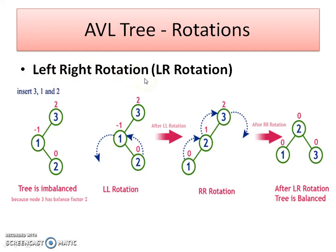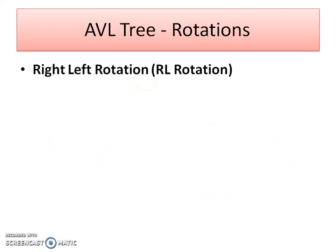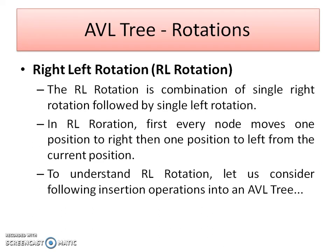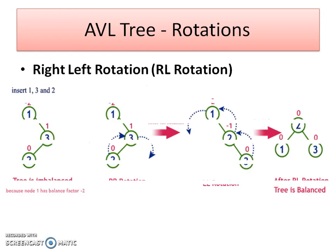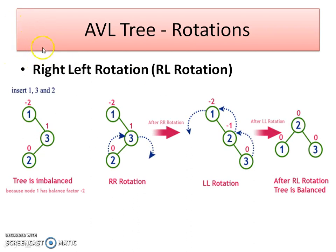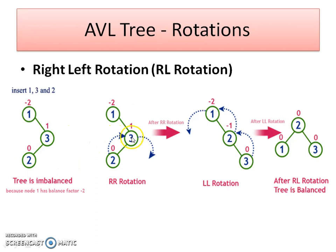Now for the next double rotation — right-left rotation — you can pause the video and go through the formal definition. This is the opposite case: the imbalance is at the root node, but the root node has a right child and the right child has only a left child. Here the imbalance is at the root node. So we need to perform first of all a right rotation: 2 will take the position of 3, and 3 will take the position as a right child of 2.